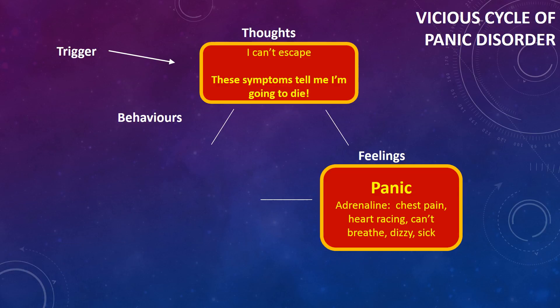These adrenaline symptoms — these normal symptoms of anxiety — feel like actually you might die. We have chest pain, our heart races, we can't breathe, we feel dizzy, we feel sick. And so we think these symptoms tell us we're going to die. If you're thinking that, it starts off the panic cycle — it strengthens the thoughts and it strengthens the feelings.